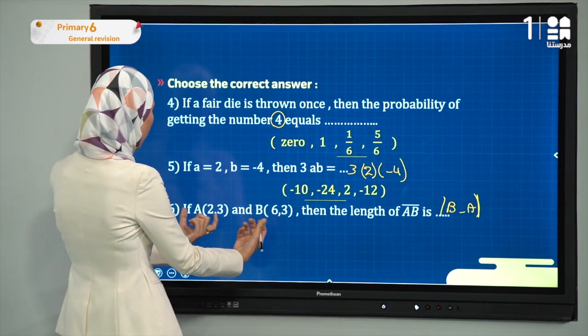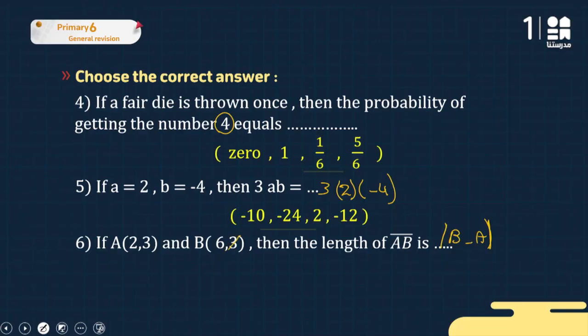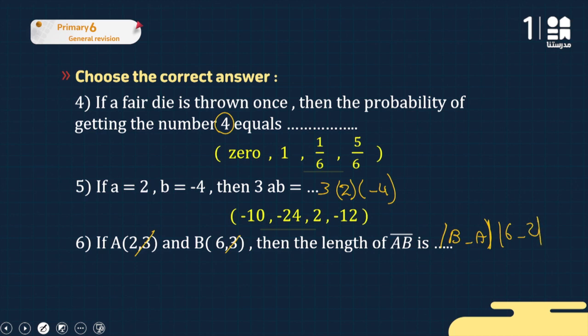I have B and A here. The y-values are equal so they cancel to zero. For the x-values: absolute(6 - 2) = absolute(4) = 4. So the length of AB is 4. The answer is 4.